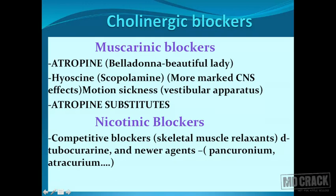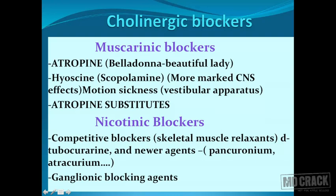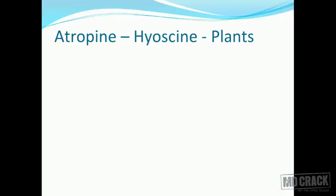The third group of muscarinic blockers consists of the derivatives and substitutes of atropine, used in place of atropine for various conditions. So among muscarinic blockers we have atropine, hyoscine, and atropine substitutes. For nicotinic blockers, you have competitive blockers at the skeletal muscle nicotinic receptor site — called skeletal muscle relaxants — including older agents like d-tubocurarine and newer agents like pancuronium and atracurium. There are also ganglionic blocking agents acting at nicotinic ganglionic sites.